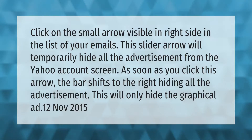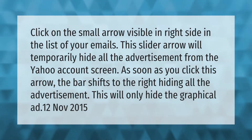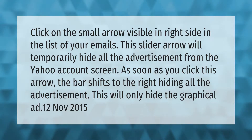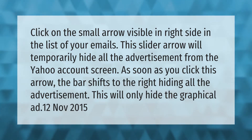Click on the small arrow visible on the right side in the list of your emails. This slider arrow will temporarily hide all the advertisements from the Yahoo account screen. As soon as you click this arrow, the bar shifts to the right, hiding all the advertisements. Note: this will only hide graphical ads.